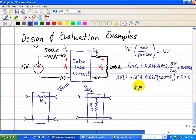Now we solve for R1. R1 equals 10 divided by 0.025 minus 500, which equals 350 ohms.